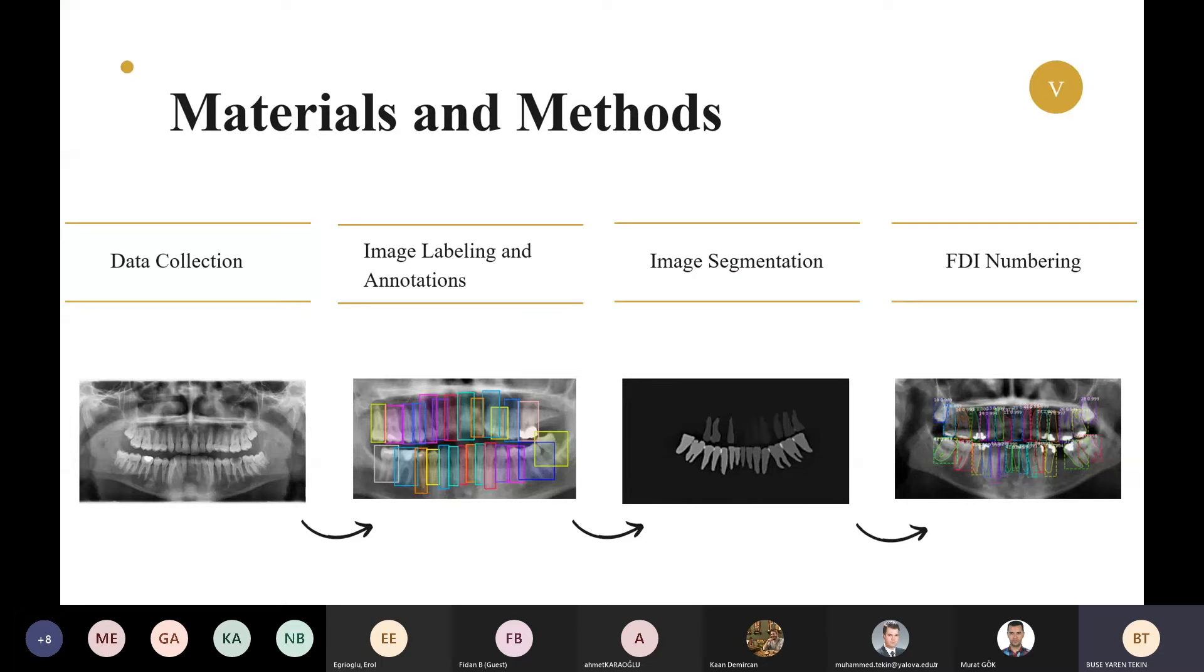Our materials and methods, you can see in this picture, consist of four steps. Step one is data collection. The data set used in this study was obtained by obtaining the ethics committee report. The test part of the data set used consists of random data from the data set. Step two is image labeling and annotations.